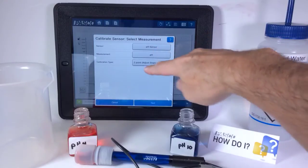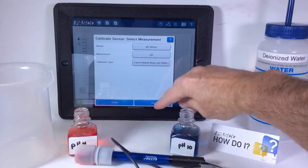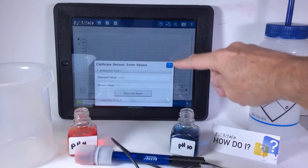Once it's found the pH sensor, it says two-point. That's the default. That's what I want. Next.